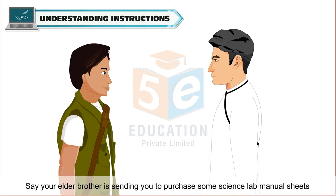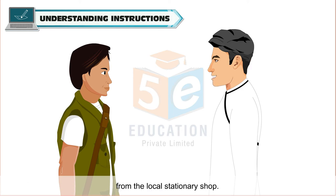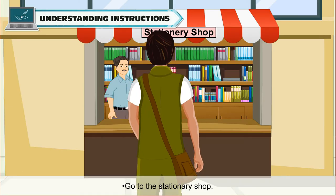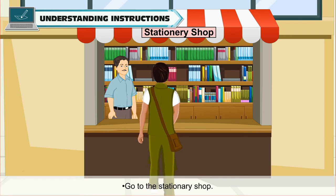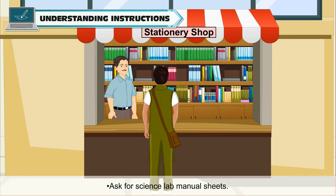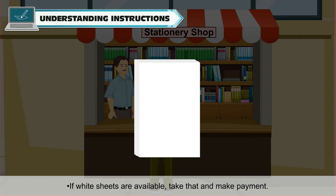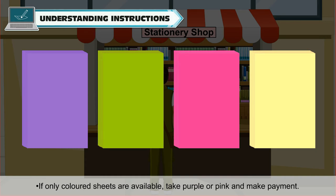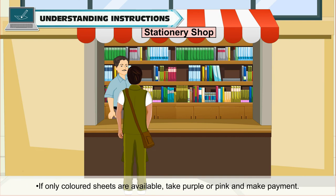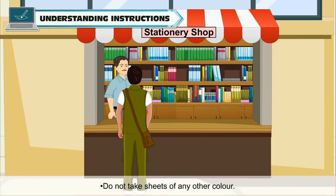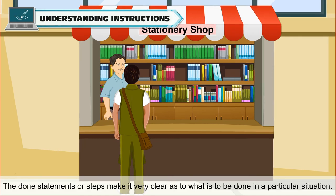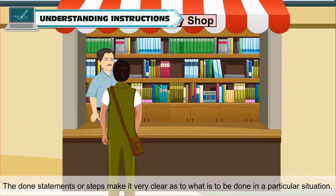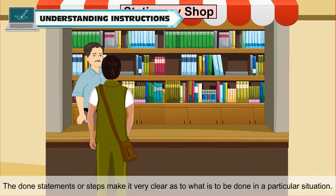Let us take an example to understand this. Say your elder brother is sending you to purchase some science lab manual sheets from the local stationery shop. Here are the instructions: go to the stationery shop, ask for science lab manual sheets. If white sheets are available, take that and make payment. If only colored sheets are available, take purple or pink and make payment. Do not take sheets of any other color. These statements make it very clear as to what is to be done in a particular situation.